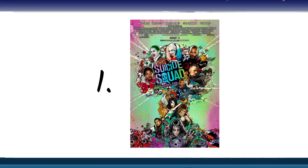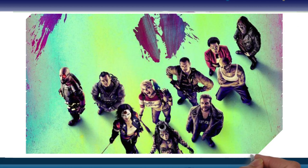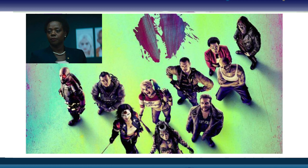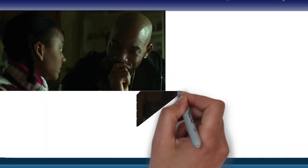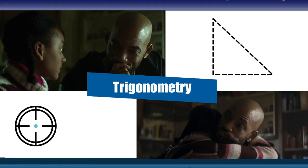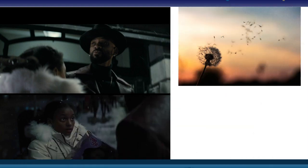The list starts with Suicide Squad. In this action-packed blockbuster, super villains are assembled to form a task force. In a heartfelt scene, moments before he's taken away, Will Smith is teaching his daughter the basics of trigonometry — explaining right-angle triangles and applying the concept to shooting. He tells his daughter that, like in maths, life is filled with variables — a beautiful metaphor wrapped in the marvel of math.